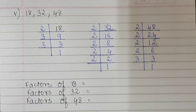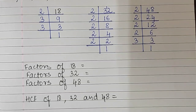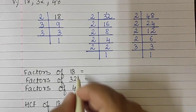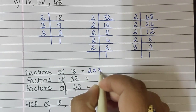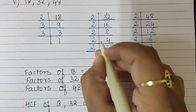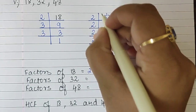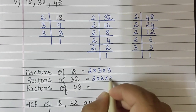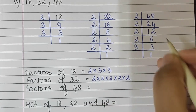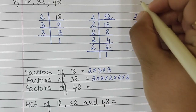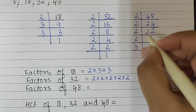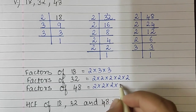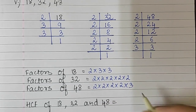We have already found the factors of these numbers and now we will note them down. For 18 it is 2 into 3 into 3. For 32 it is 2 into 2 into 2 into 2 into 2. And for 48 it is 2 into 2 into 2 into 2 into 3.